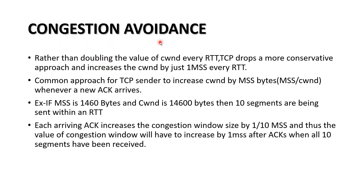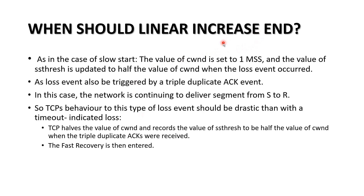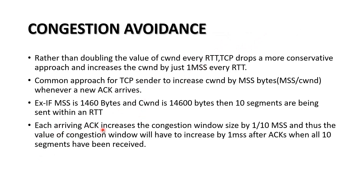Here, how congestion is being avoided: firstly, let's say there are 1460 bytes sent and the congestion window is a total of 14600 bytes. So there are 10 segments being sent within an RTT. Each arriving ACK increases the congestion window size by 1/10 MSS, whereas in slow start, if an ACK arrives it increases by 1 MSS.